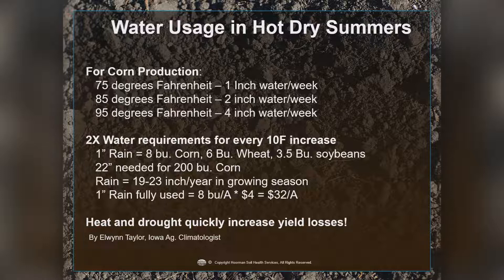One acre-inch of water is worth about eight bushels of corn, six bushels of wheat, and about three and a half bushels of soybeans. For a 200-bushel corn crop, we need about 22 acre-inches of water a year. On average we get about 19 to 23 inches, but a lot of times it comes in two, three, even four inch increments, so not all of it is fully used. At $4 corn, one acre-inch of water fully used is worth $32 an acre more in income. Heat and drought very quickly increase yield losses, so it's very important to have high organic matter soils to keep the water storage in our soils.